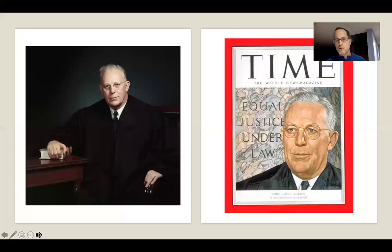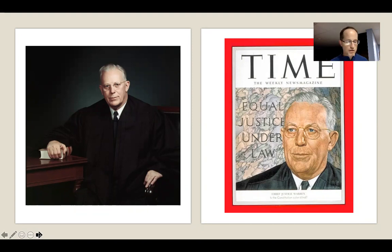Earl Warren was Chief Justice from 1953 until 1969 and presided over what most political scientists and historians call a constitutional revolution. He was a Republican appointed by Dwight David Eisenhower. Previously, he had been governor of California for a decade, and he oversaw the detention of Japanese Americans in internment camps in California. He had been the vice presidential candidate with Thomas Dewey in 1948, and ran in 1952 for the Republican nomination, losing to Dwight Eisenhower.